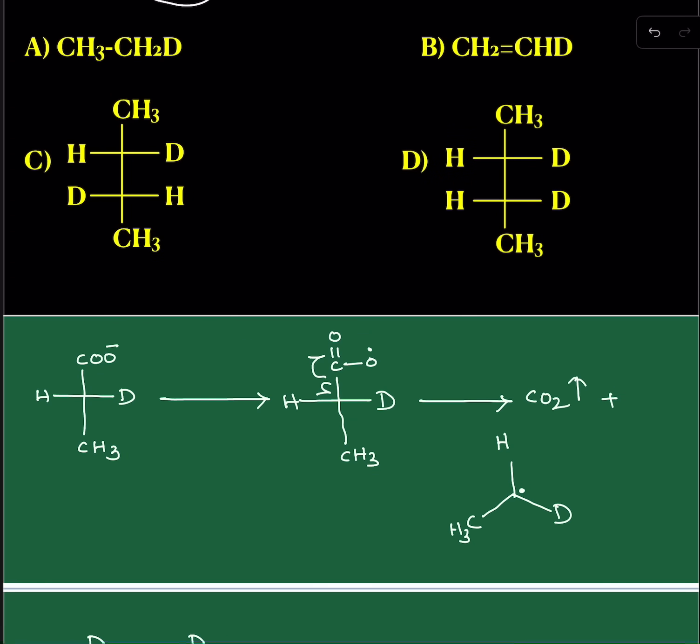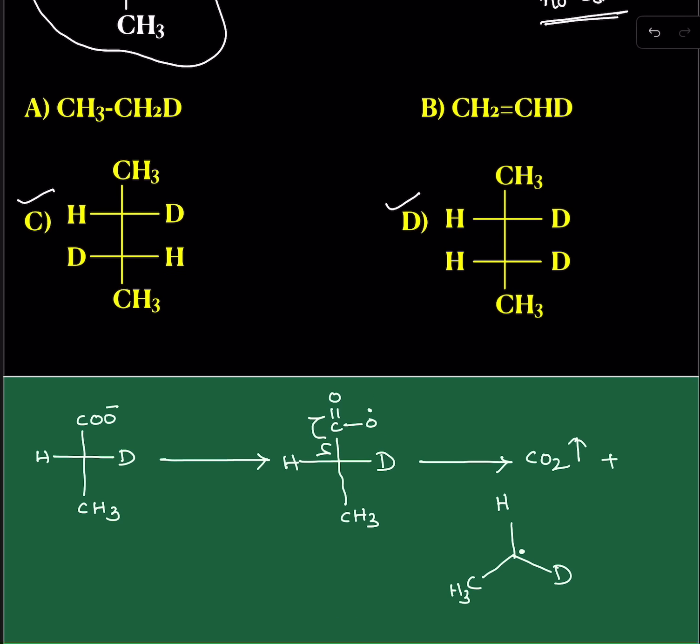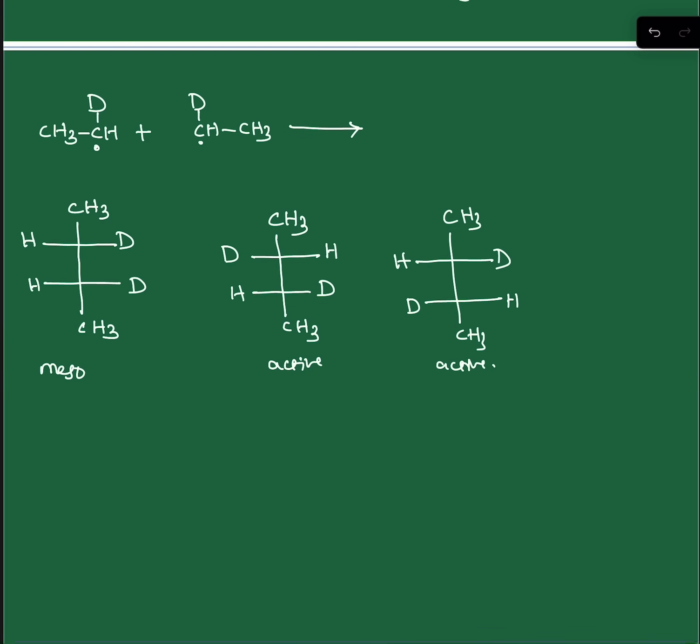But in the options, they have given a meso compound and one active isomer. So these two are definitely possible. Next, in options A and B, alkane and alkene are given. These are produced due to disproportionation.